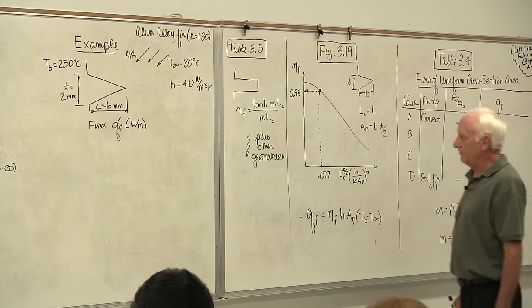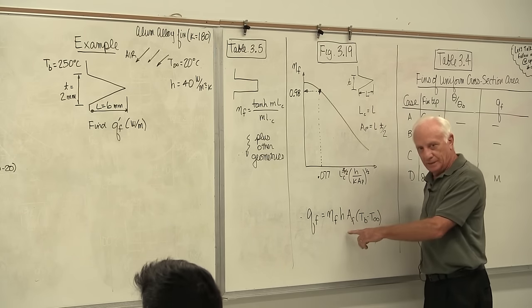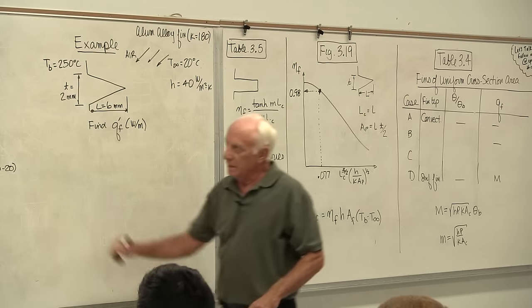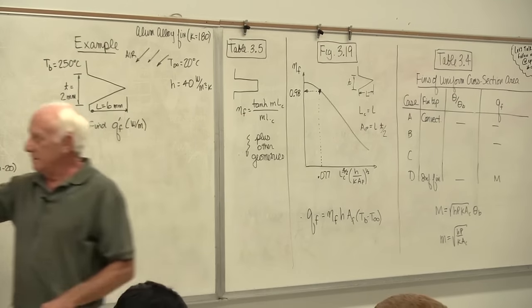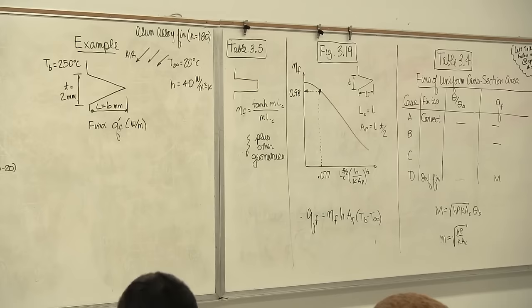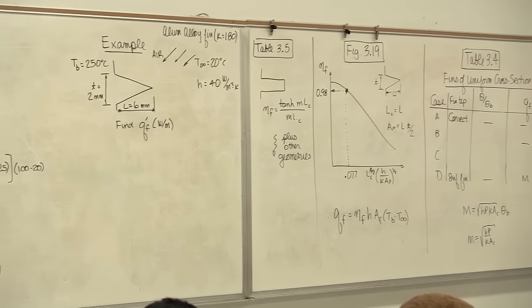Now I know the fin efficiency. Plugging into QF equals fin-efficiency times H times A-fin times (T-base minus T-infinity): fin efficiency is 0.98, H is 40, base temperature is 250 and air temperature is 20.